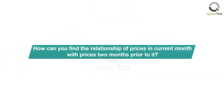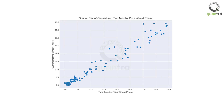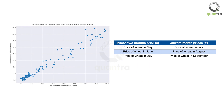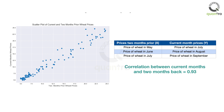How can you find the relationship of prices in the current month with prices two months prior to it? You can find the correlation between prices in a month and the prices two months back. To find correlation, we have taken the data for the past 10 years, stored the time series in Y and the two-month lag time series in X. The correlation comes out to 0.93. This is also called autocorrelation, or serial correlation, as you are finding the correlation of a time series with its lagged values.